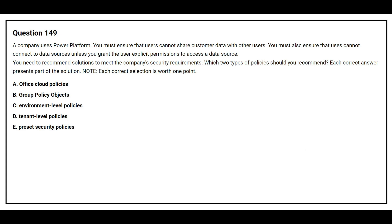Question number 149. A company uses Power Platform. You must ensure that users cannot share customer data with other users or data sources. You must also ensure that users cannot connect to data sources unless you grant the user explicit permission to access a data source. You need to recommend solutions to meet the company's security requirements. Which two types of policies should you recommend? Option A: Office cloud policies. Option B: Group policy object. Option C: Environment level policies. Option D: Tenant level policies. The correct answers are Option C, environment level policies, and Option D, tenant level policies.